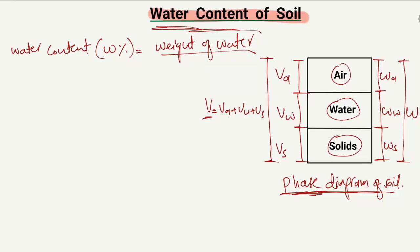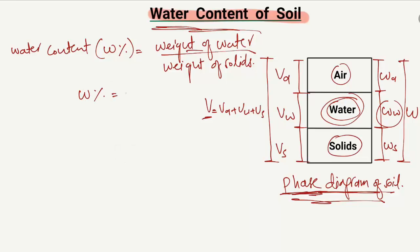Looking at the phase diagram of the soil sample, the weight of water is WW and the weight of solids is WS. So the water content equals the weight of water divided by the weight of solids, multiplied by 100%. Always keep in mind that this formula must always be multiplied by 100%, so water content is always expressed as a percentage.